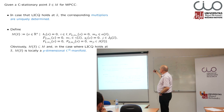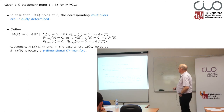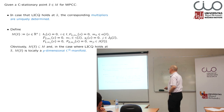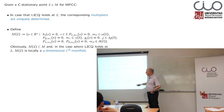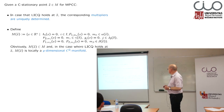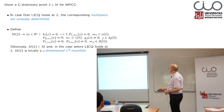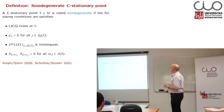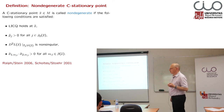If LICQ holds, the multipliers are of course uniquely determined. We can also see then that linear independence implies that locally the set M(X-bar), where only the active constraints come into play, is a p-dimensional C2 manifold. Now we have to say, when we are talking about a C stationary point, what means non-degeneracy.